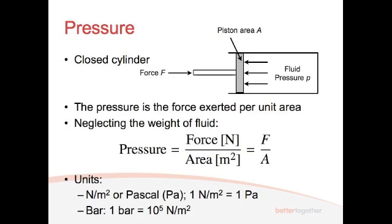Now, force is obviously measured in newtons. Area is measured in square metres. And so, we end up with the units of pressure being newtons per metre squared, and they're also known as Pascal, and they're the same thing. One newton per metre squared is one Pascal. You may have heard of Pascals before.